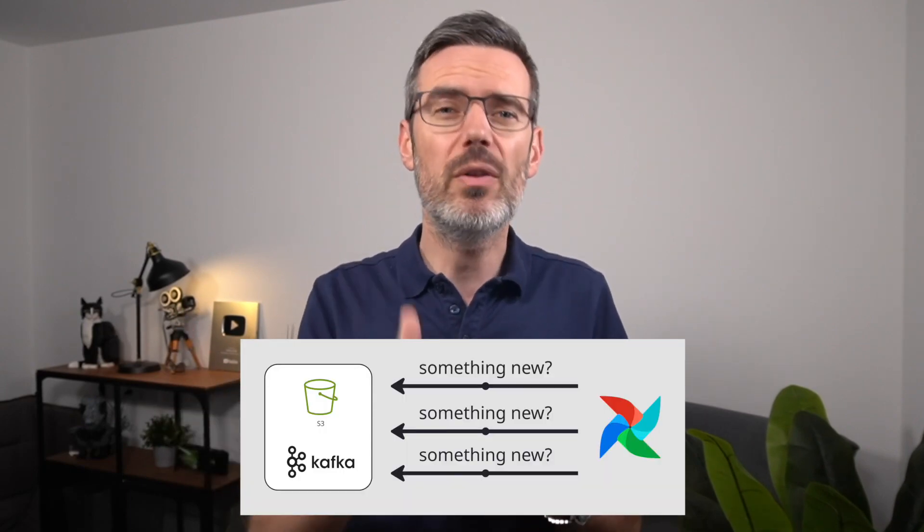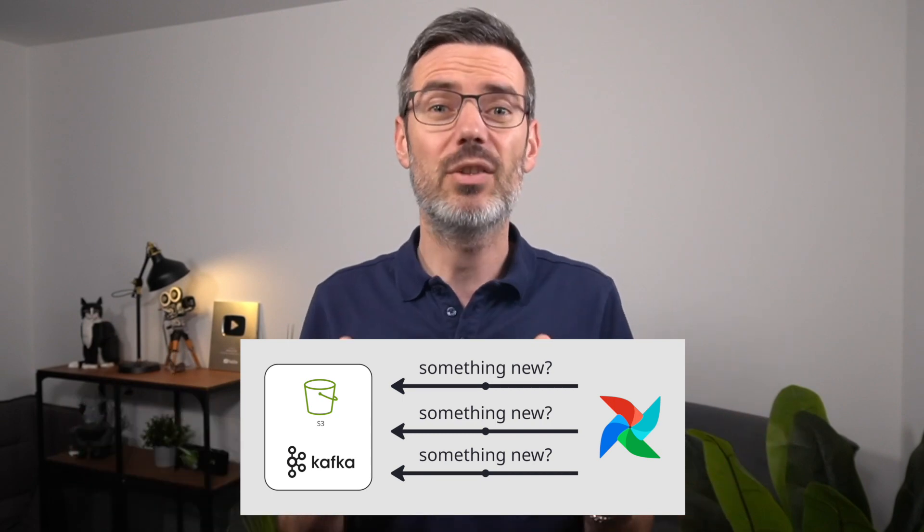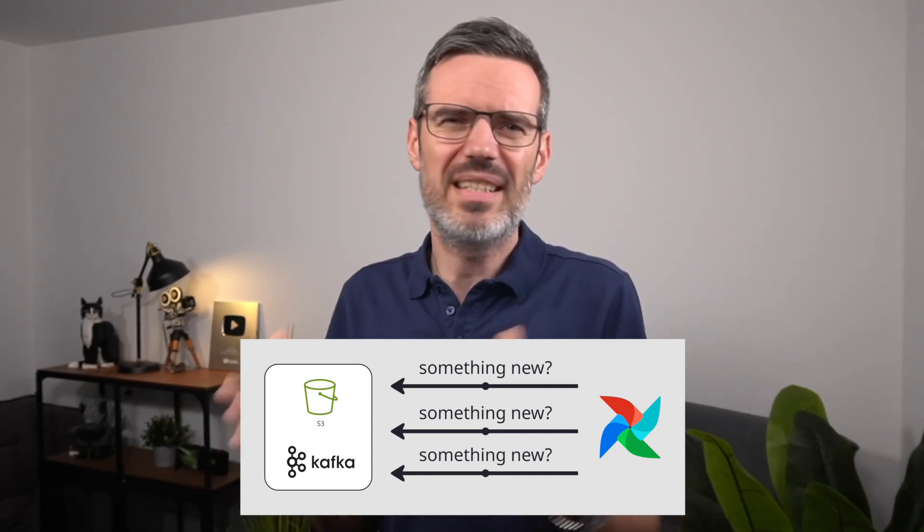One of the most exciting new features in Airflow 3.0 is event-driven scheduling. Until now, triggering Airflow DAGs based on external events was not great. If you wanted to trigger a pipeline when a file lands in an S3 bucket, a message is published to Kafka, or a downstream system finishes processing data, your only real option was to poll that system using a sensor that runs every X minutes. This creates problems: it's inefficient, sensors just sit there wasting resources, it delays reactions to only after the next poll cycle, and it eats up worker slots which can bottleneck your whole DAG queue.